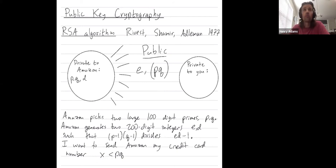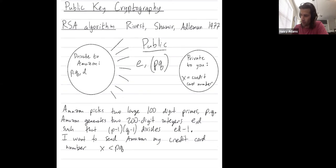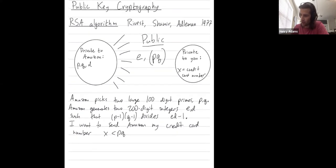So private to me should be my credit card number. I don't want to share that. So what do I now do to send Amazon my credit card number?